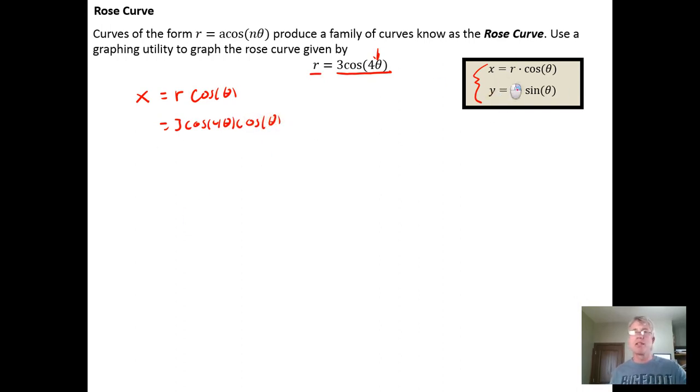Similarly, I know what y is in terms of r and theta. y equals r sine theta from our background in trigonometry. Here I have an equation that describes in polar form the relationship between the radius and theta. So I can make a substitution and replace r with 3 times the cosine of 4 theta times the sine of theta. Now I actually know x and y parameterized as functions of theta.